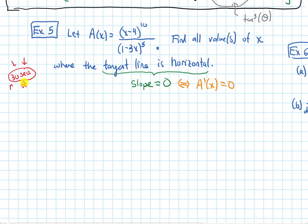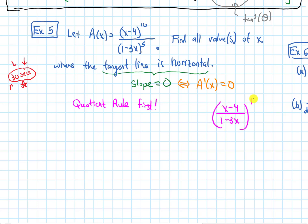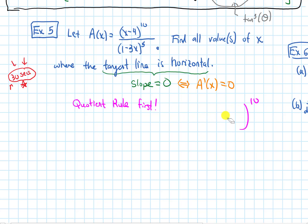We use quotient rule first, because most immediately we have a function on top divided by something on the bottom. If instead we had something like x minus 4 over 1 minus 3x, and the whole fraction was raised to the 10th power, then most immediately we'd see a whole fraction plugged into a power, and that would be chain rule first. We'll get better at recognizing which rule to use with more practice — if you're occasionally unsure, that's totally natural and part of the learning process.